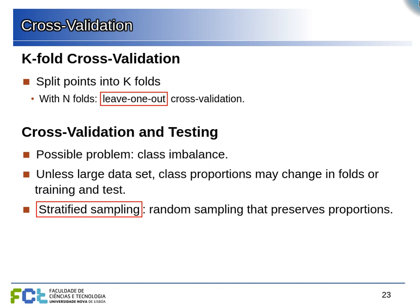This is called k-fold cross-validation. Typical values are 5 or 10 folds. A special case called leave-one-out cross-validation uses as many folds as data points — each iteration leaves out exactly one example. This is typically only used when the dataset is very small, to avoid training on too few data points.